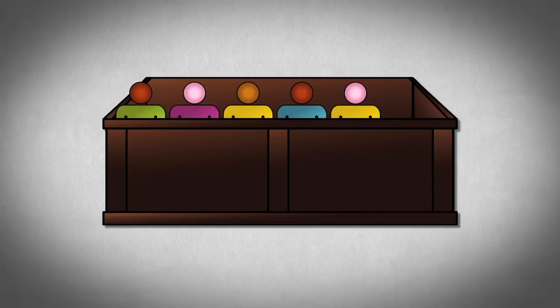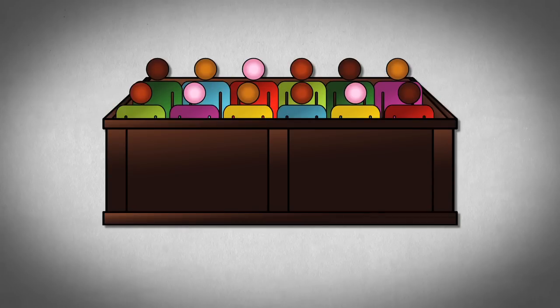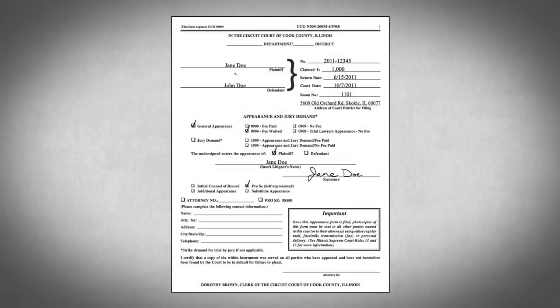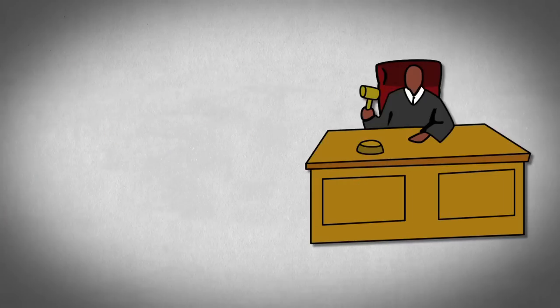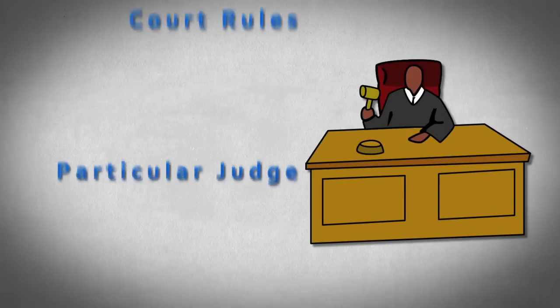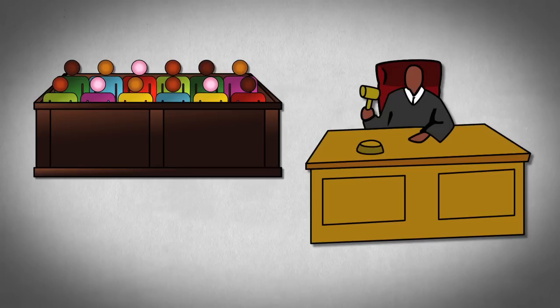If you want to ask for a jury trial, you usually can do so when you file your appearance. Whether the judge allows it is based on the court rules and the particular judge. You should check with your court's clerk to find out if you can ask for a jury or not.